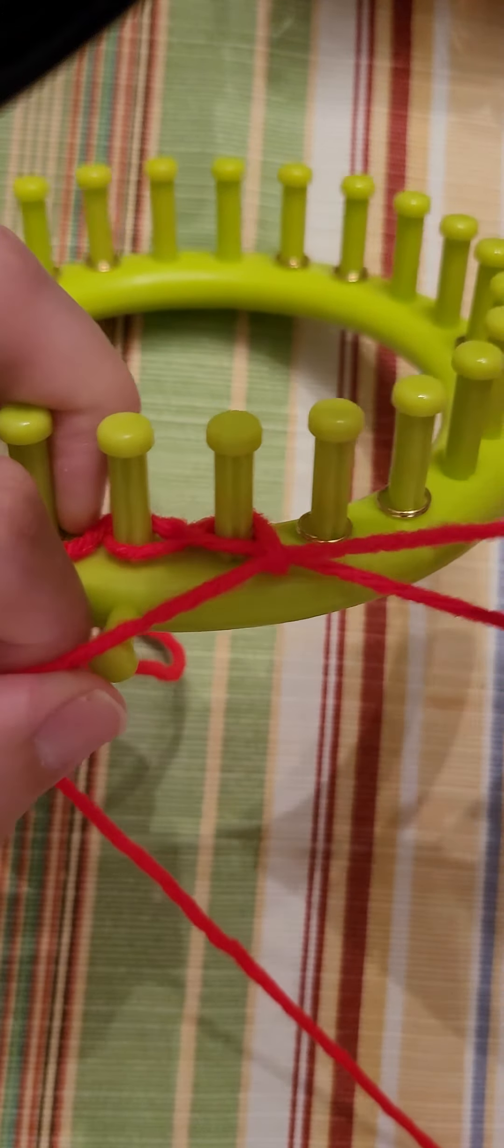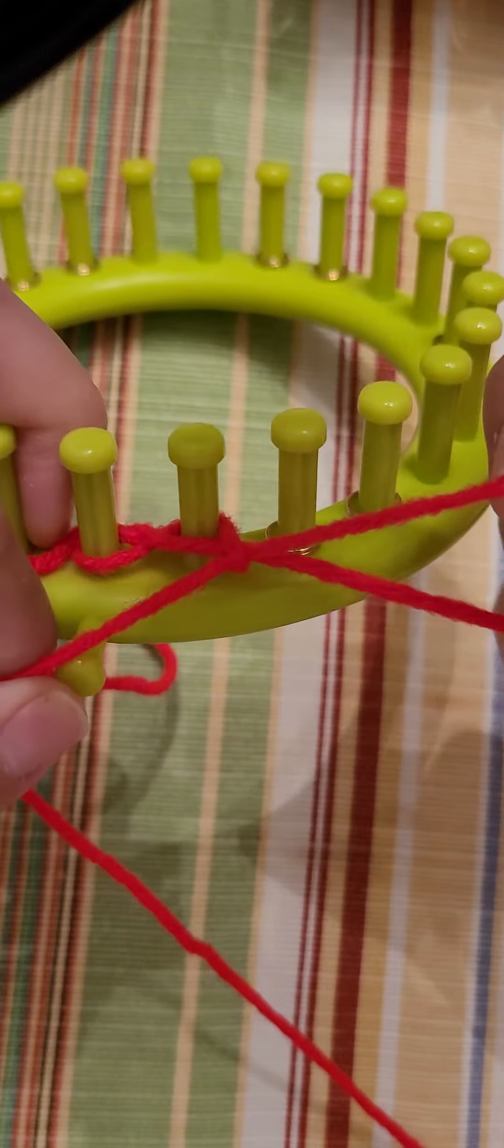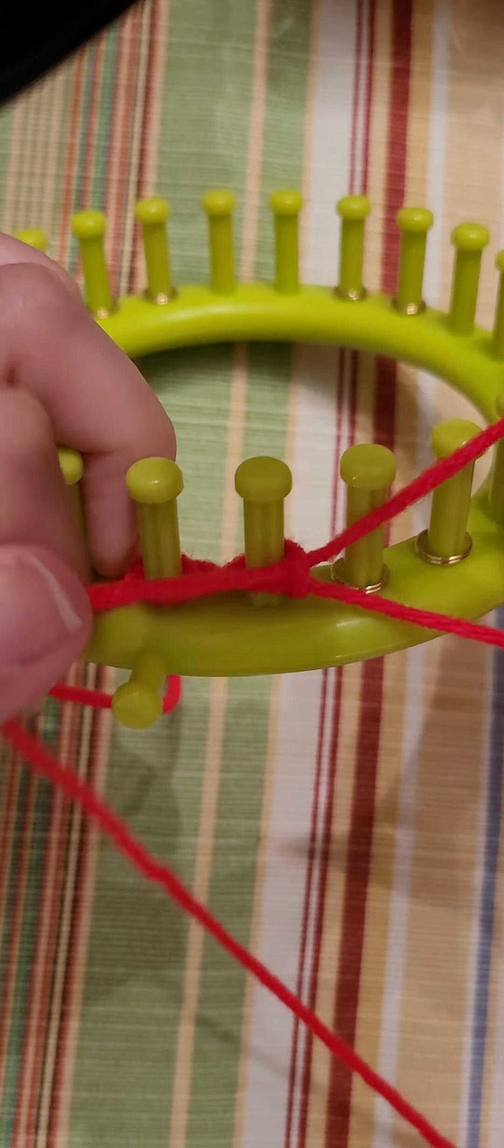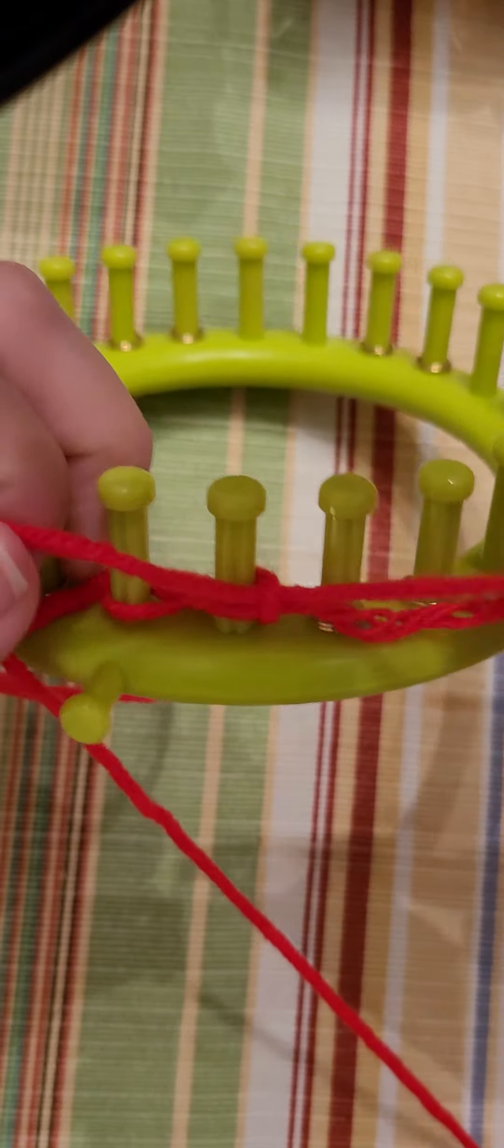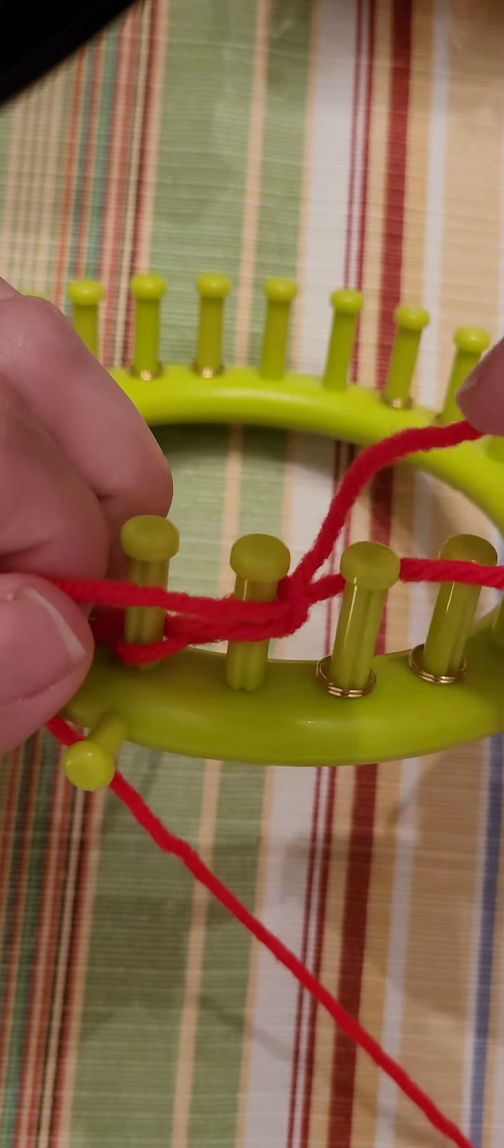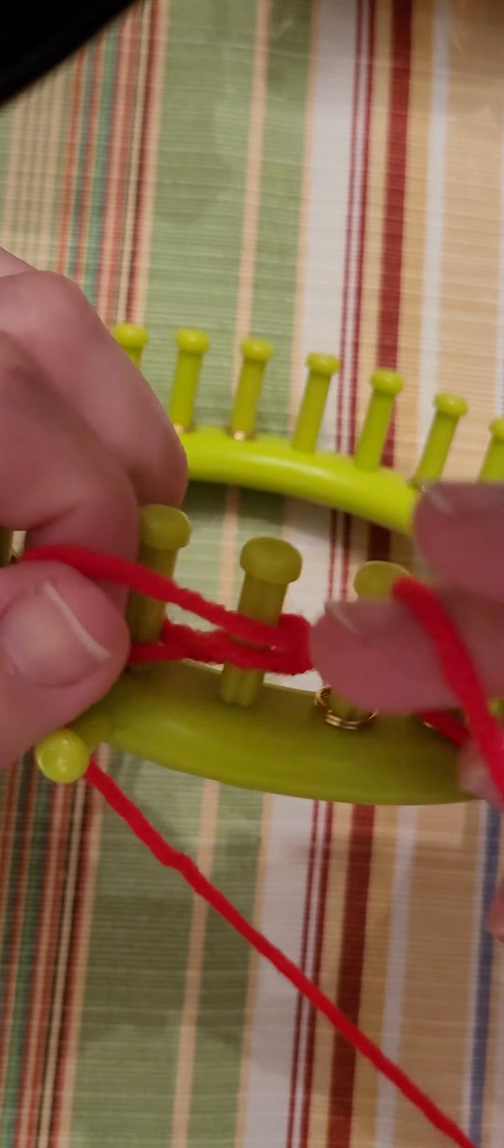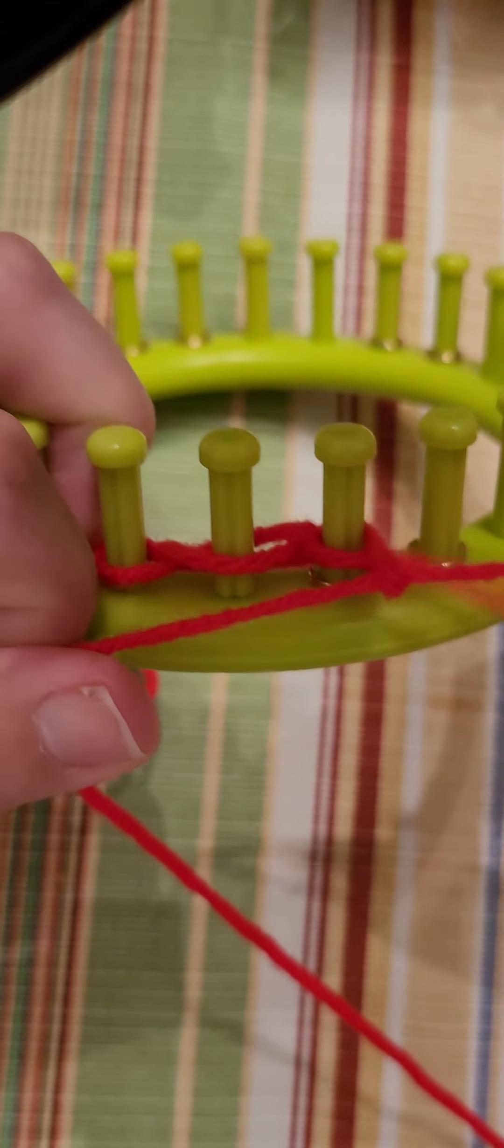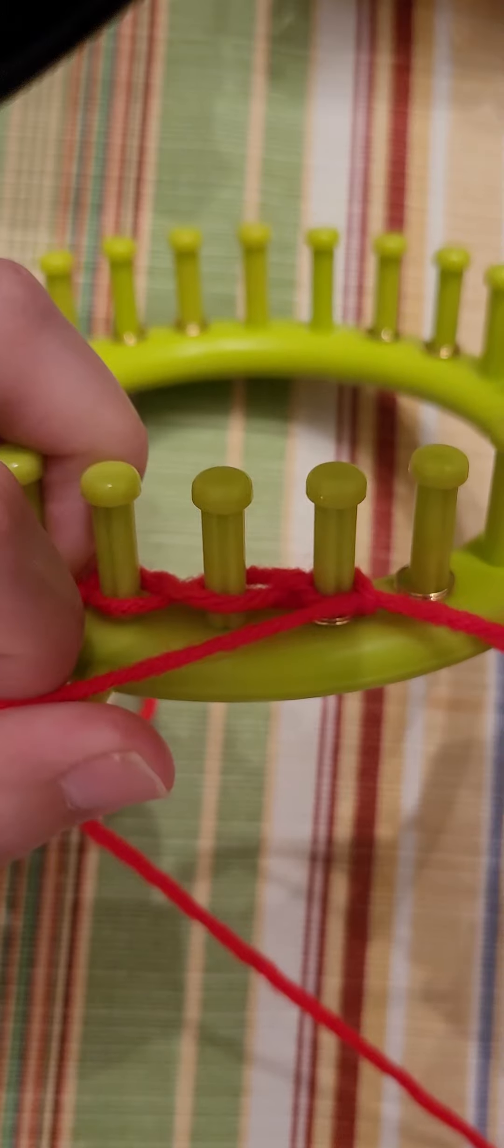Holding the one strand that doesn't move, and then move the one that's attached to your yarn roll. Same again, put the loop behind the peg, bring your yarn through, hold it, tighten it up.